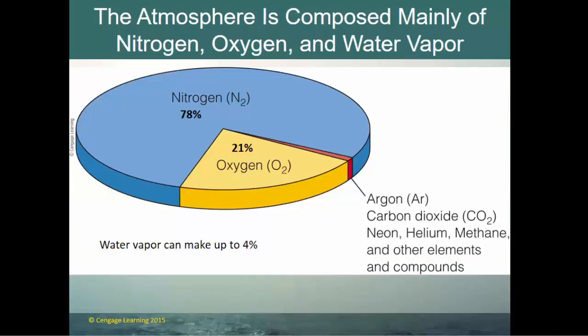The atmosphere is composed mainly of nitrogen, oxygen, and water vapor — mostly nitrogen, 21% oxygen, and then small amounts of argon, carbon dioxide, neon, helium, methane, and other elements. Of all these, water vapor can make up anywhere between 0% and 4%, making it a variable gas.